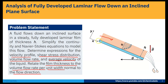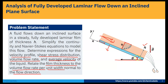The fluid is flowing downward along the inclined surface. The film thickness is h and gravity is acting in the downward direction. The velocity profile will be maximum at the free surface, while at the solid surface the velocity is zero. The inclined plane makes an angle theta with the horizontal direction.